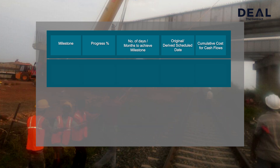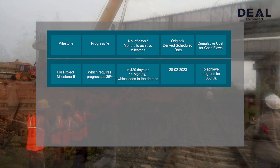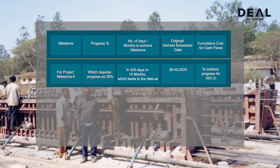For Project Milestone 2, which requires 35% progress in 420 days or 14 months, the date is 28th February 2023 to achieve progress worth Rs. 350 crore.